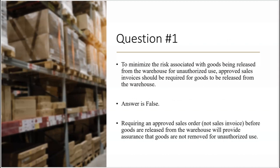To minimize this risk, approved sales orders — not sales invoices — should be required for goods to be released from the warehouse. The warehouse gets a copy of the sales order form; the warehouse doesn't even get a copy of the sales invoice. The sales invoice is created after the warehouse releases goods to shipping and after the goods are shipped to the customer. The sales order is first, the bill of lading is second, and the sales invoice is third.